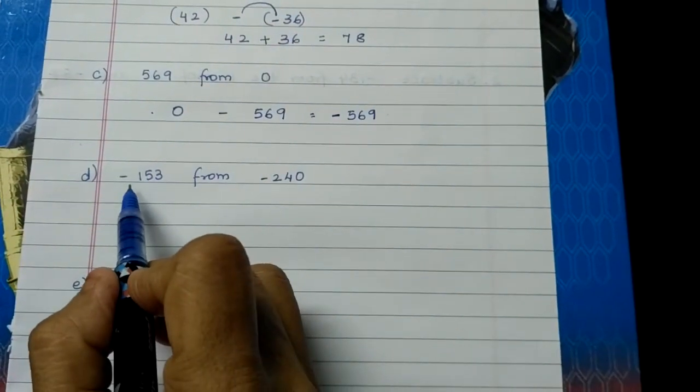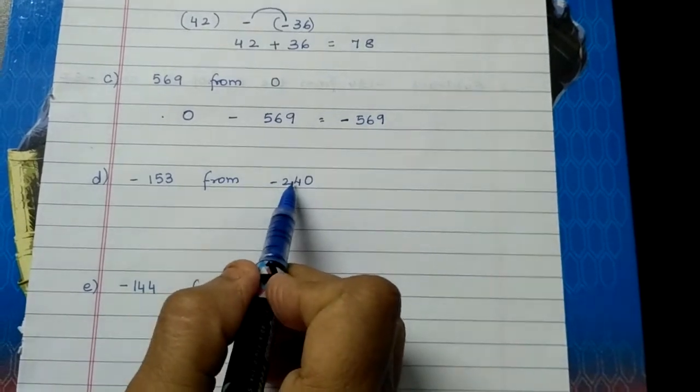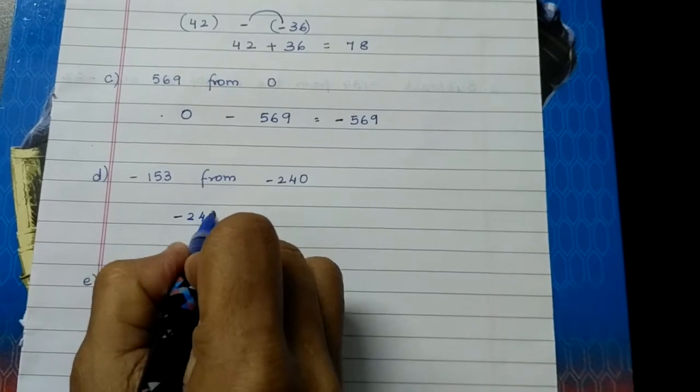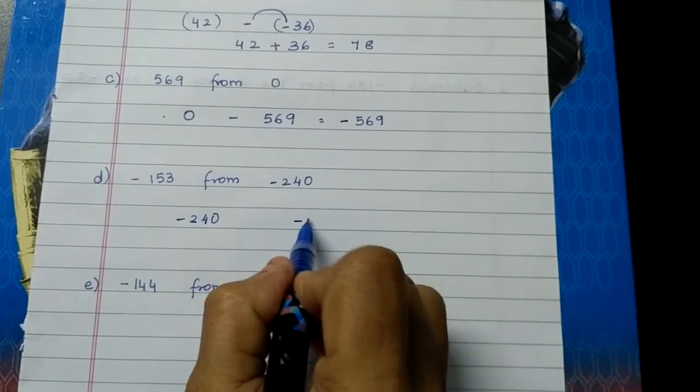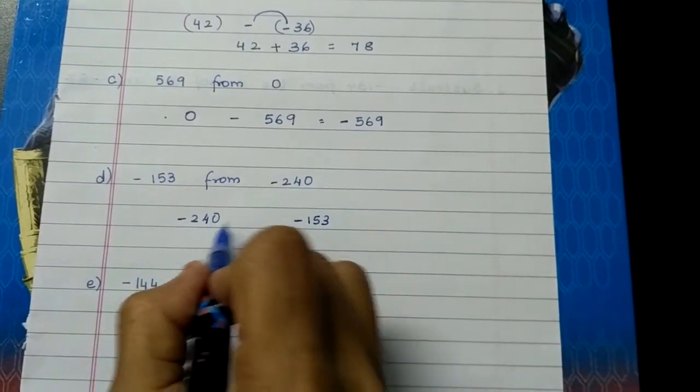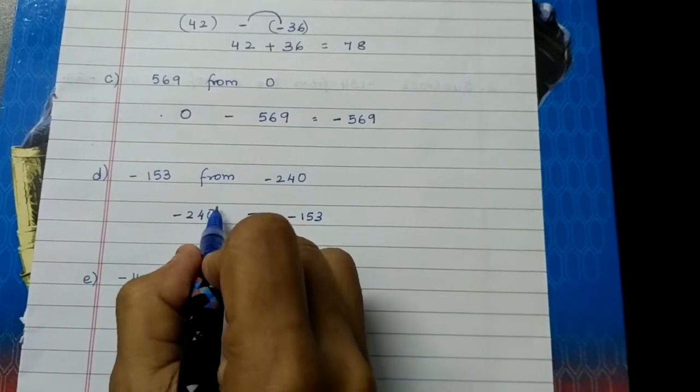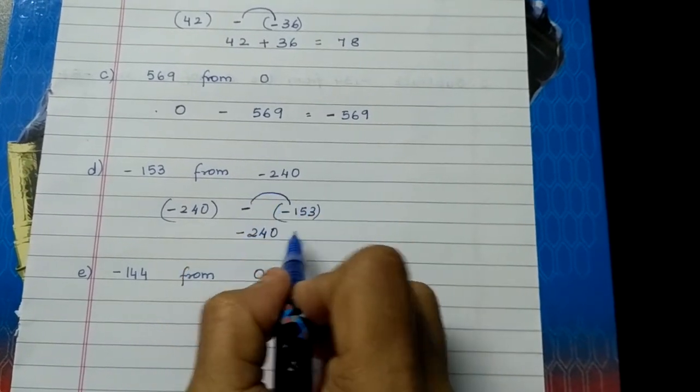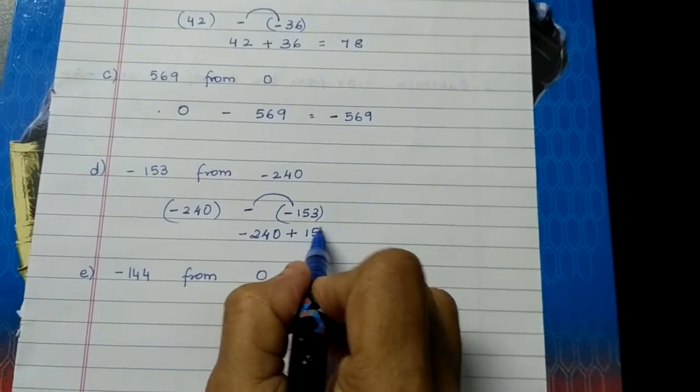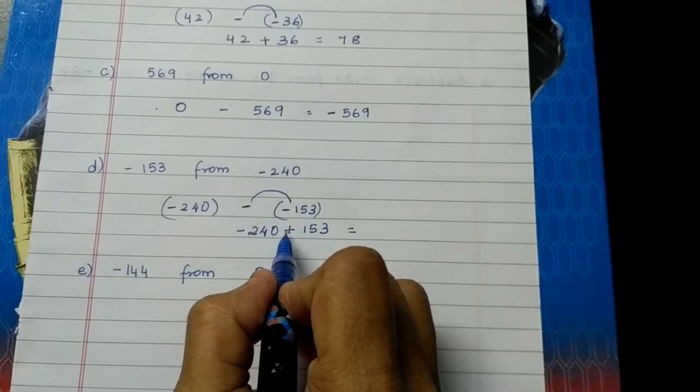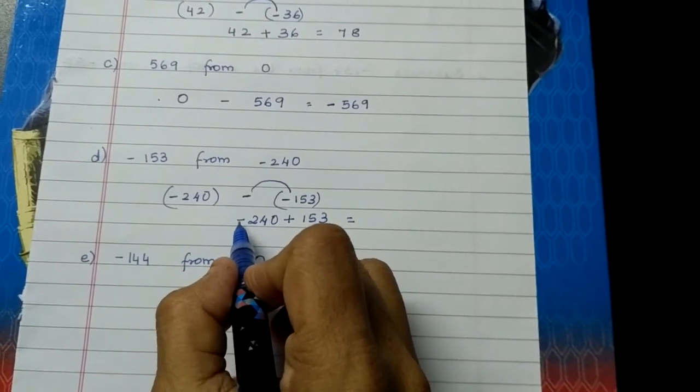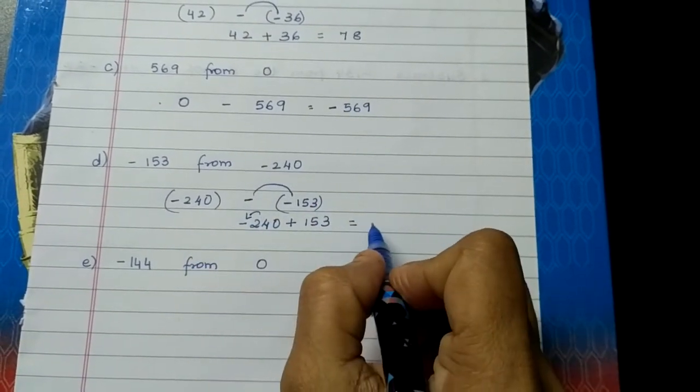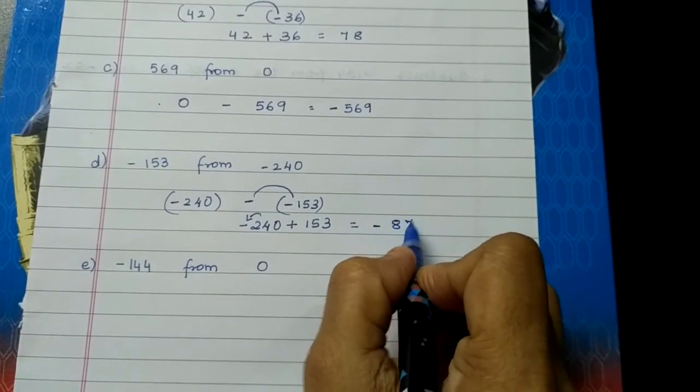Next, subtract minus 153 from minus 240. Now what is the number after from? Minus 240. And what is the number here? Minus 153. And what do we have to do between these two? We have to subtract. So minus 240 minus into minus plus 153. Now if there is one addition sign and one negative sign, what do we do? We subtract and put the sign of greater number. So the answer is minus 87.